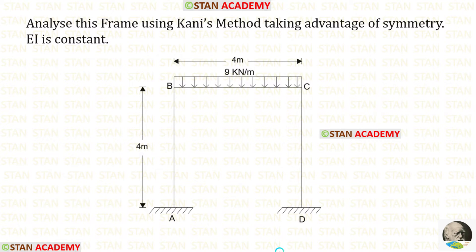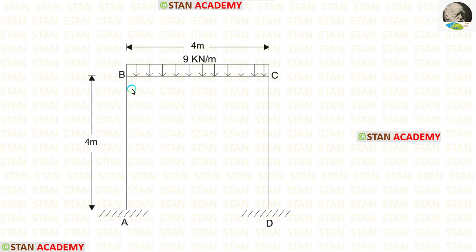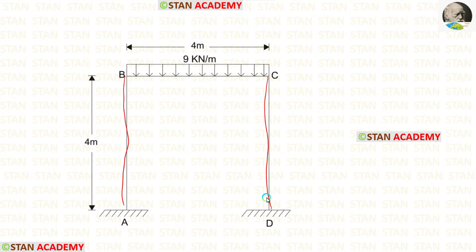Hello everyone. Today we are going to analyze this frame using Kani's method. Before analyzing, let us see the frame one time. In this frame, there are two columns: column AB and column CD. Also there is a beam BC.